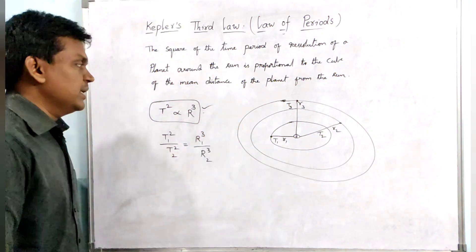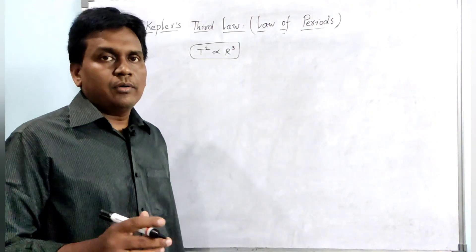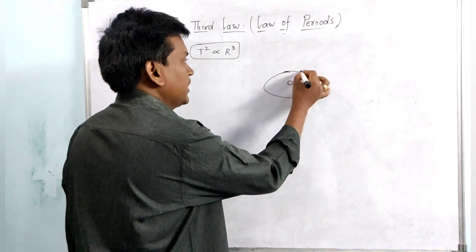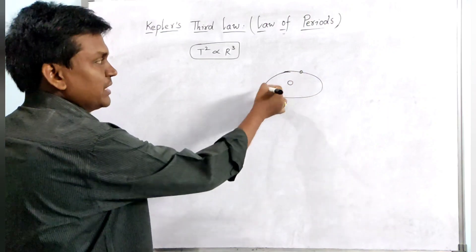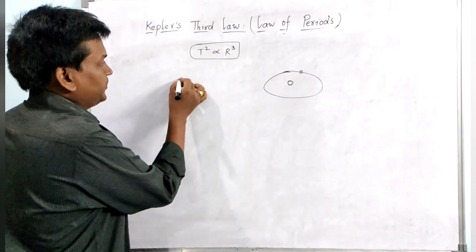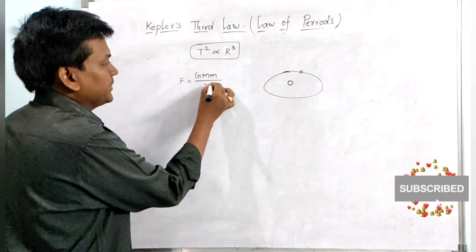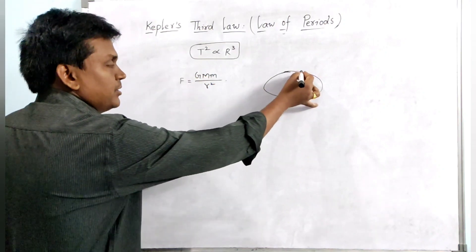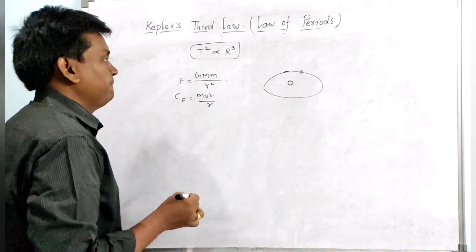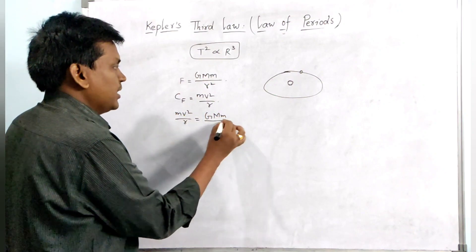Now let us see how T squared directly proportional to R cubed has been derived mathematically. We know that a planet revolves around the sun in an elliptical orbit, and due to the sun's gravitational force the planet is able to revolve. The gravitational force is F equals G·M·m divided by R squared. The centripetal force acting on the planet radially inward is equal to M·v squared divided by R. Setting these equal, we get M·v squared divided by R equals G·M·m divided by R squared.